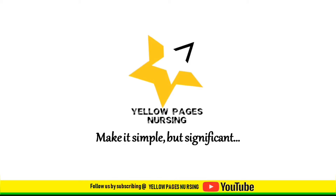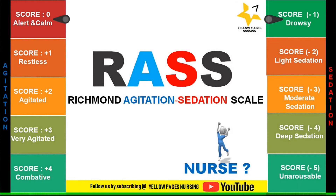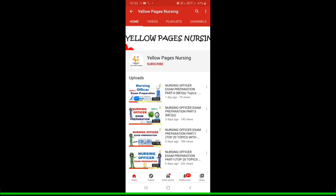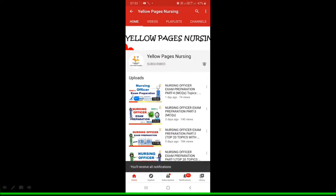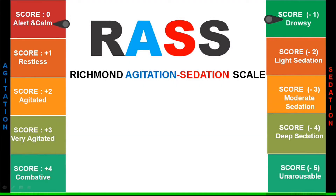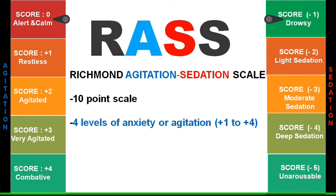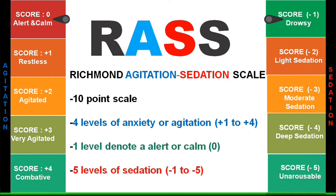Hello everyone, welcome to Yellow Pages Nursing. Today's topic is about the RASS scale, that is the Richmond Agitation-Sedation Scale. It is a 10-point scale which helps to assess a patient's level of anxiety or agitation, patient's level of alertness or calm, and patient's level of sedation. For anxiety or agitation, the scores given are from plus one to plus four. For alertness or calm, the score given is zero, and for levels of sedation the scores are given as negative, that is minus one to minus five.